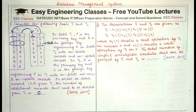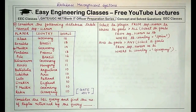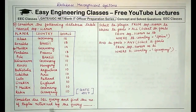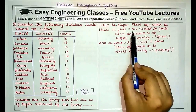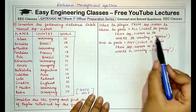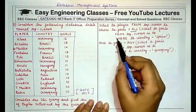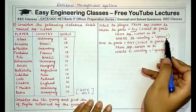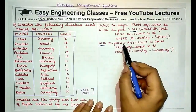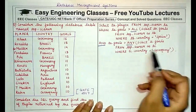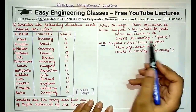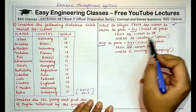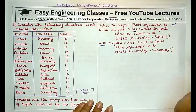Now consider a database table called TopScorer. We are given an SQL query and asked to find the number of tuples returned. The query selects players where goals are greater than ALL values from a subquery that selects goals where country is Spain and goals are greater than ANY values from an innermost subquery selecting goals where country is Germany.